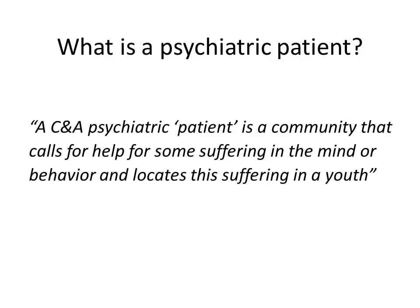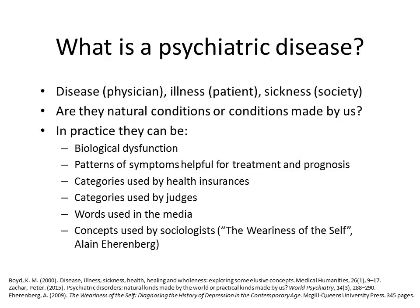I propose this definition: a child and adolescent psychiatric patient is a community, not a single subject — it is a community that calls for help for some suffering in the mind or behavior and locates the suffering in the youth. This is a little provocative but close to what I experience with my patients. What is the definition of a disease? There are many definitions and they depend on language. In English you have three definitions: disease, labeled by the physician; illness, said by the patient — 'I am ill'; and sickness, said by society — 'he is sick today.' Even in language there is tension in the definition of disease, disorder, and so on.